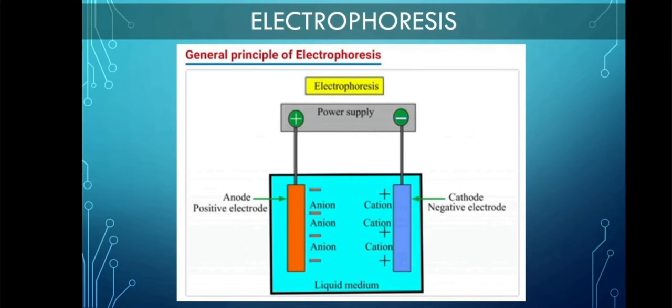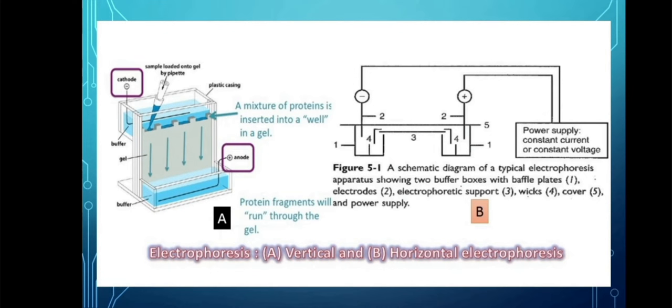If you introduce a sample with cation or positive charge molecules, they will migrate toward the cathode. We have two types of electrophoresis. The first image on your left is vertical electrophoresis. Why vertical? Because the cathode is located on the topmost part and the anode at the bottom. When a mixture of proteins is inserted into the gel, it separates accordingly.